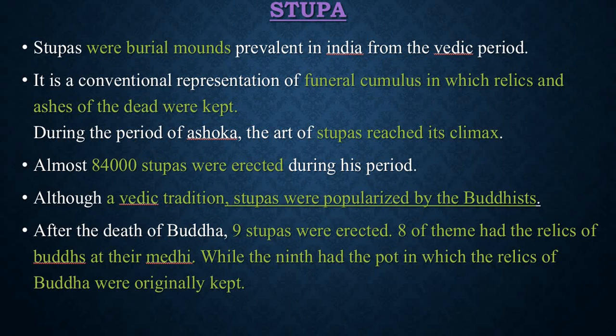After Buddha's Parinirvana, Ajatashatru who ruled the Magadha region, the Licchavis who ruled Vaishali, the Koliyas who ruled the Ramanagar area, and many other kingdoms attacked the Mallas. After the attack, the Mallas agreed that Buddha's remains — his ashes and bones — would be divided into eight parts, with each part given to one kingdom.